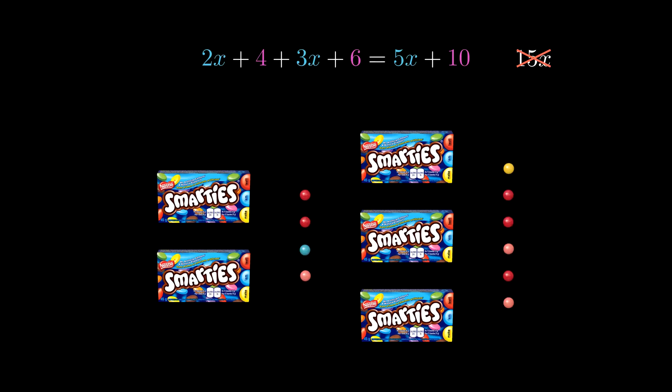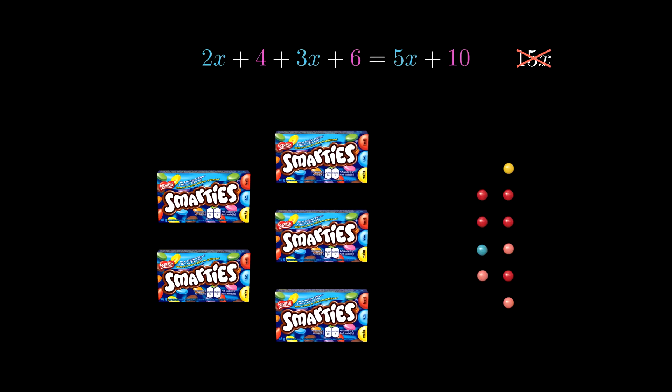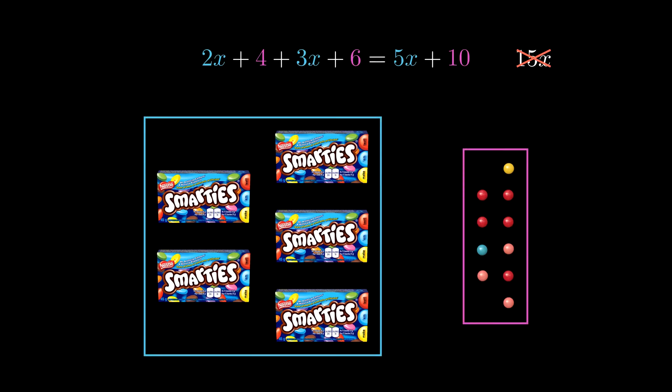So don't be surprised if your simplest answer at the end has maybe something with an x attached and a number off to the side by itself. When we've got two completely different objects in front of us, the best we can do is to just group them up like that, and say we've got 5 boxes and 10 smarties. So 5x plus 10, and there's nothing more we can do with that.